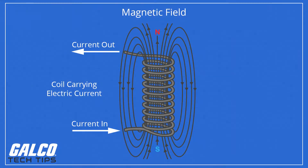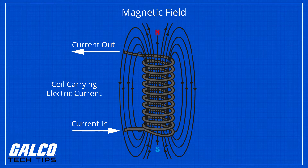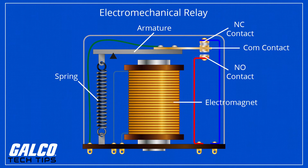These types of devices use the principles of electromagnetism, where the influence of a magnetic field, generated when current passes through a coil, activates a switch. When current is applied to devices like relays or solenoids, a magnetic field forces contacts to open or close to complete or interrupt a circuit.